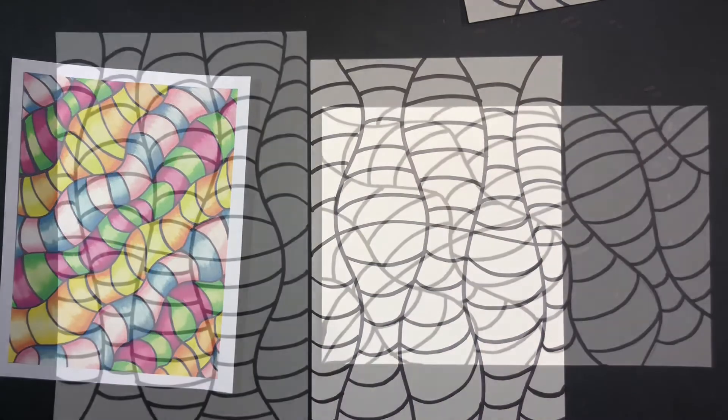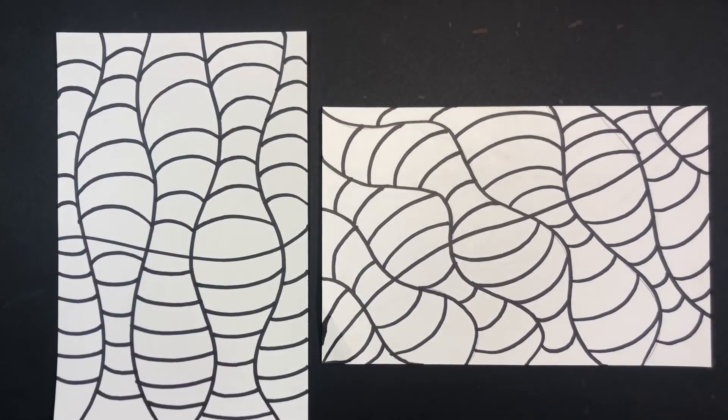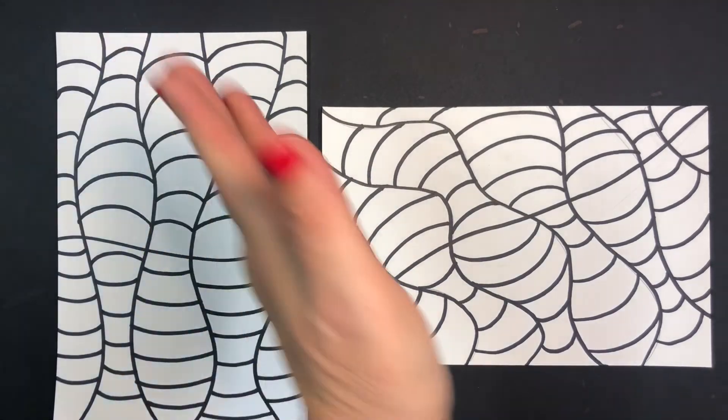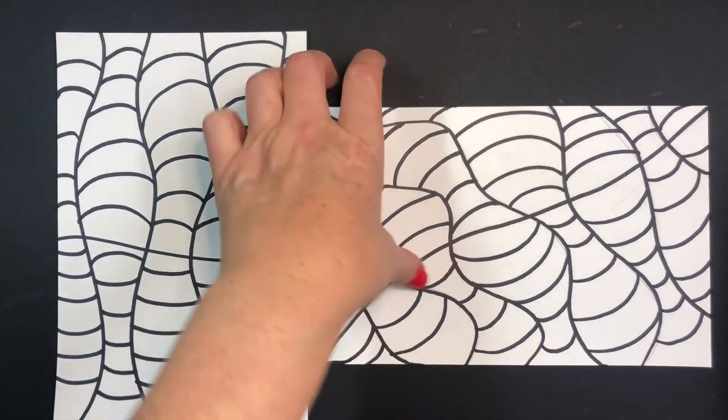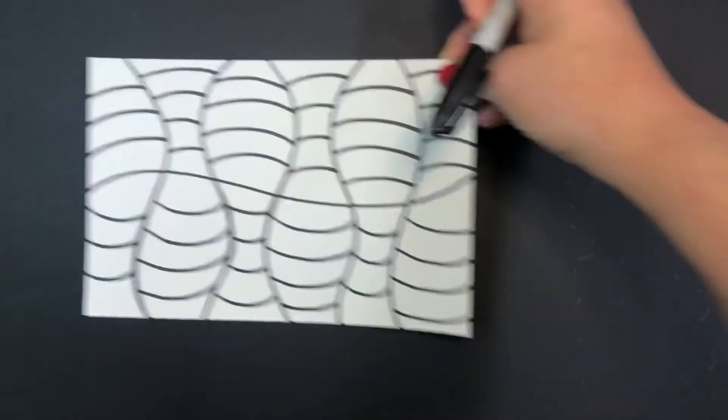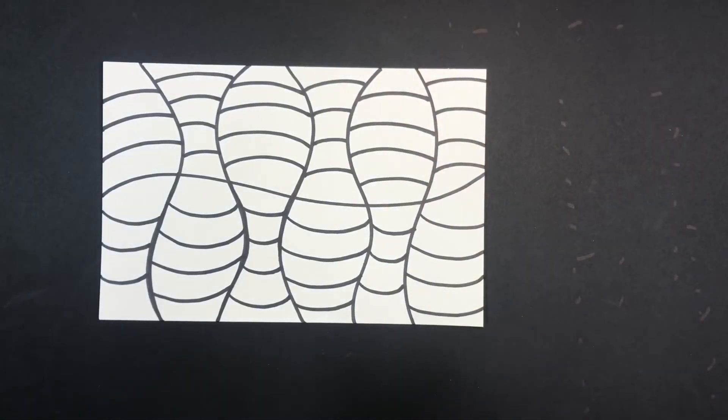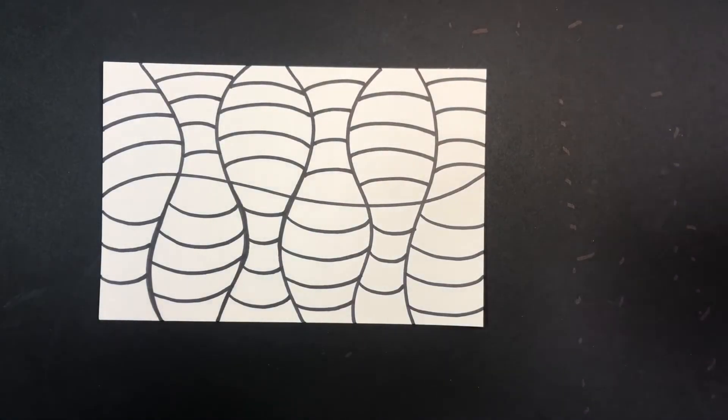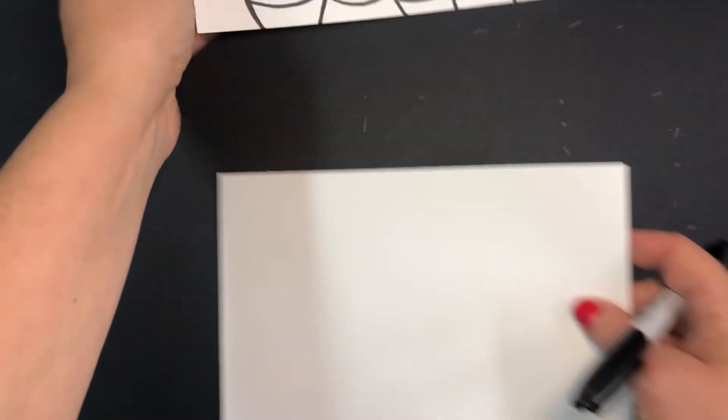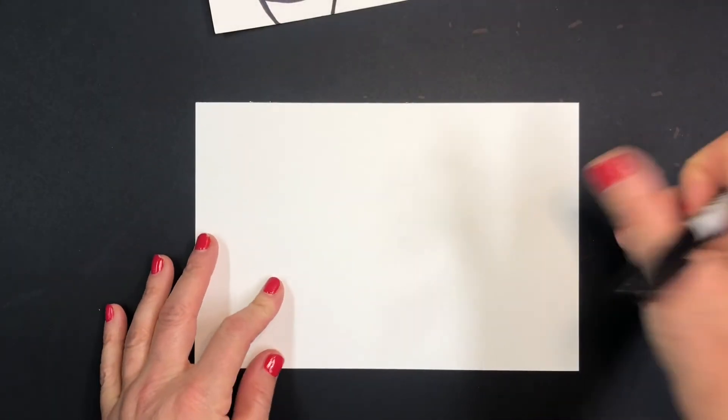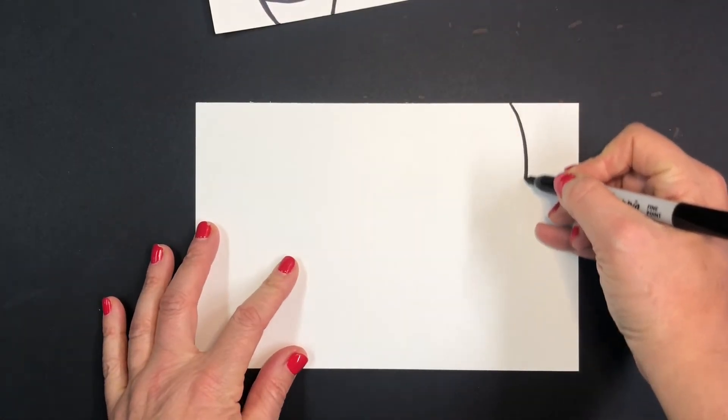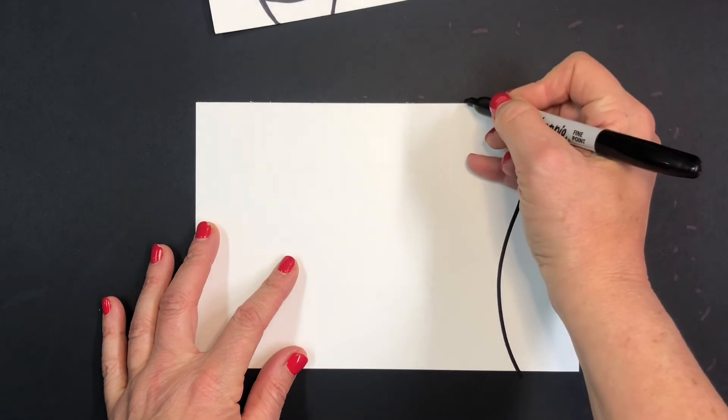I also want to show you that you can do this tubular design not only from a vertical way of doing it and a diagonal way, but also you can do it in a horizontal way. I'll show you how to do this one. All you need to do is draw your tubular lines horizontally across the page.